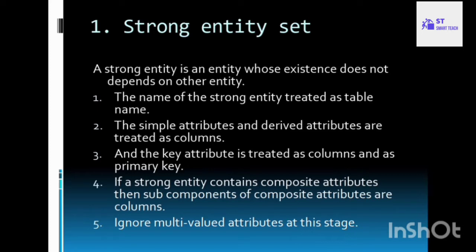The entity which contains a primary key is known as a strong entity. A primary key is used to uniquely identify each record in a table. To convert a strong entity into a table, the name of the strong entity is treated as the table name.